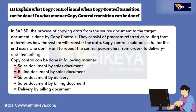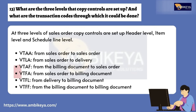Question number twelve: Explain what Copy Control is and when it can be done. In SAP SD, the process of copying data from a source document to a target document is done by Copy Controls. They consist of programs referred to as routings that determine how the system transfers data. Copy control can be done in the following ways: sales document by sales document, billing document by sales document, sales document by delivery, sales document by billing document, and delivery by billing document.